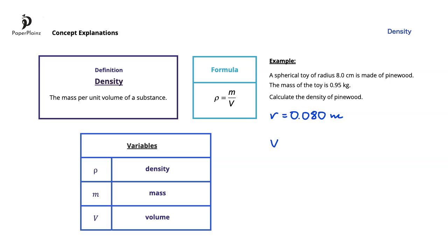Next, we'll calculate the volume of the toy. The volume of a sphere is 4 thirds pi times the radius cubed and substituting gives us 4 over 3 times pi times 0.08 to the power of 3. Carrying out the calculation and rounding, we get approximately 0.002145 cubic meter.